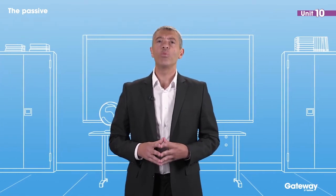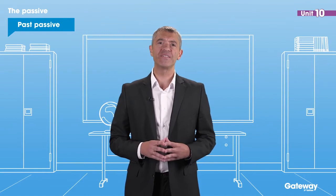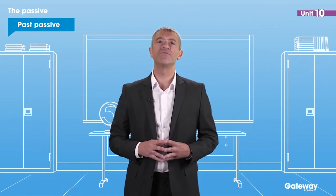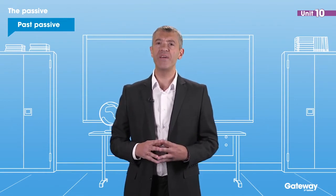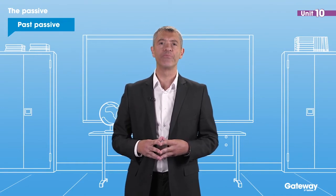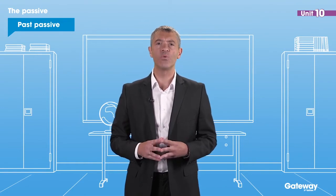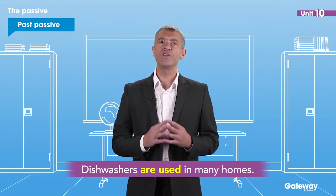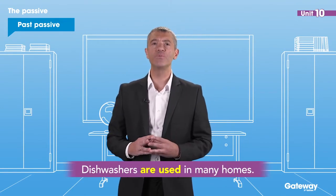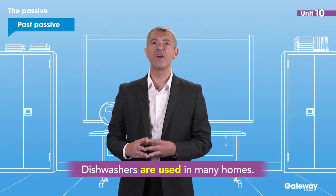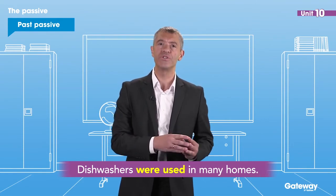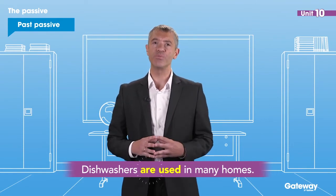When we want to make the past form of the passive, we just change the tense of the verb 'to be' and put it in the past simple. So 'dishwashers are used in many homes' becomes 'dishwashers were used in many homes.'